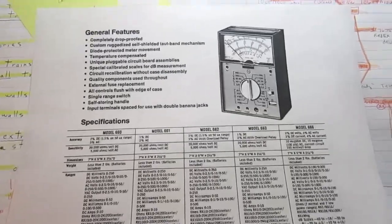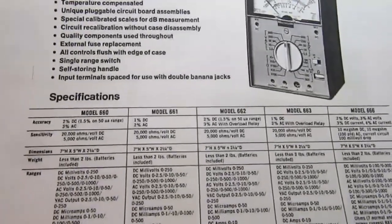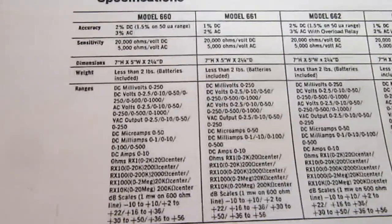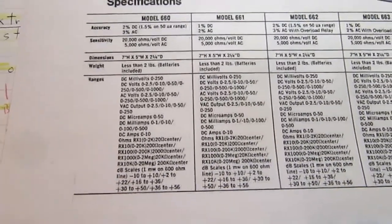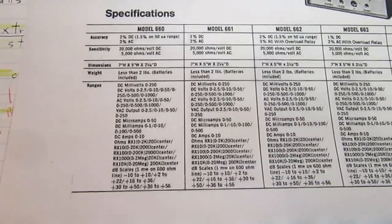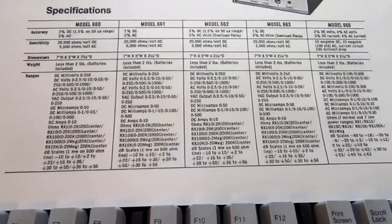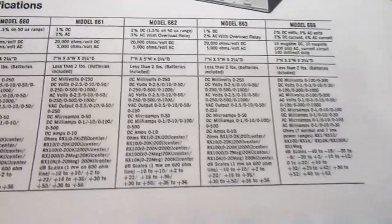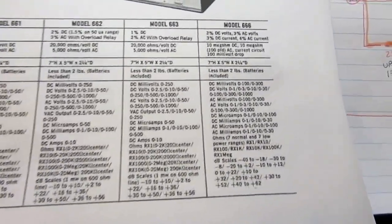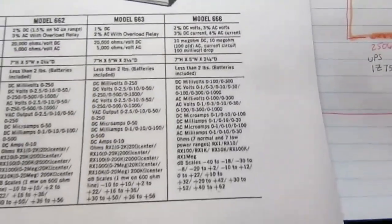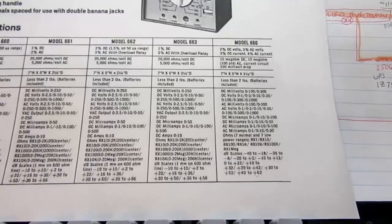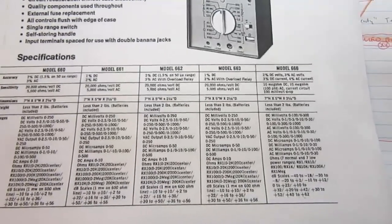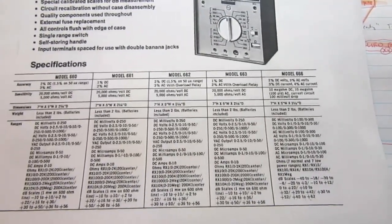This is a sheet I found online that lists the entire 6600 series. The low-end model is the 660, and that's the one Heathkit turned into the IM-105. Then they have three intermediate models: the 661, 662, and 663. Their top-of-the-line model is the 666, which Heathkit turned into the IM-104, introduced about a year after the IM-105.